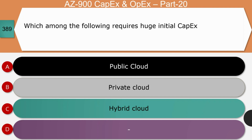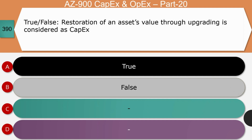Next question: Which among the following requires huge initial CapEx — public cloud, private cloud, or hybrid cloud? The right answer is private cloud. Setting up a private cloud requires huge capital expenditure: preparing a data infrastructure facility, procuring servers, storage, network and switches, setting up power units and cooling, and manpower for configuration and initial setup. All four items lead to huge CapEx.